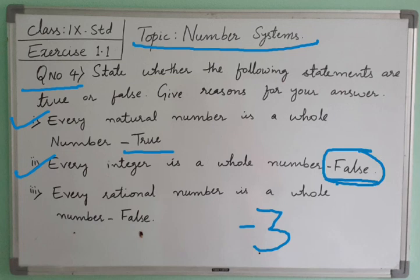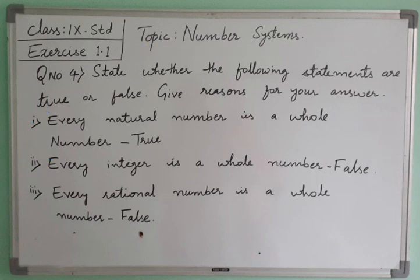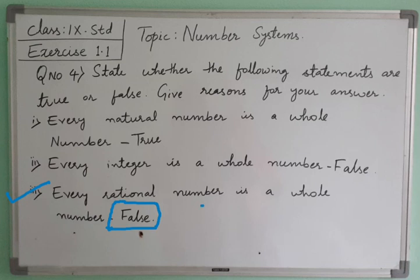Now the third question: every rational number is a whole number. When we talk about rational numbers, it is nothing but the P by Q form. Every rational number cannot be a whole number, so the statement is false. For example, if you have the number 1/2, it is in the form of P by Q, so it is called a rational number, but it is not a whole number. That is why every rational number is not a whole number.